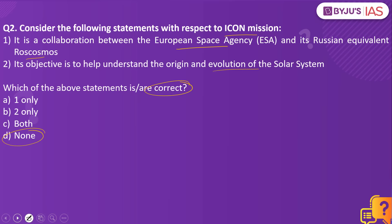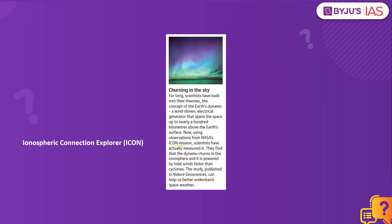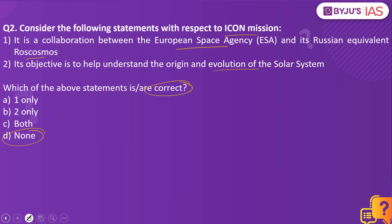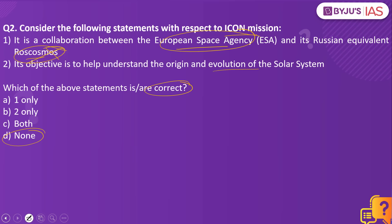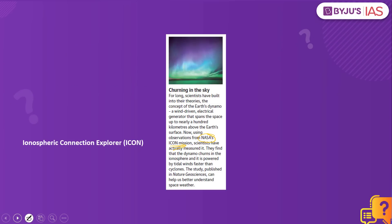We took this question because the article makes a mention of the ICON mission. The first statement is wrong because ICON mission is a NASA mission, not a collaboration between ESA and Roscosmos. The second statement is also wrong — the mission is not about understanding the origin and evolution of the solar system, but rather about finding out what is happening in the ionosphere.